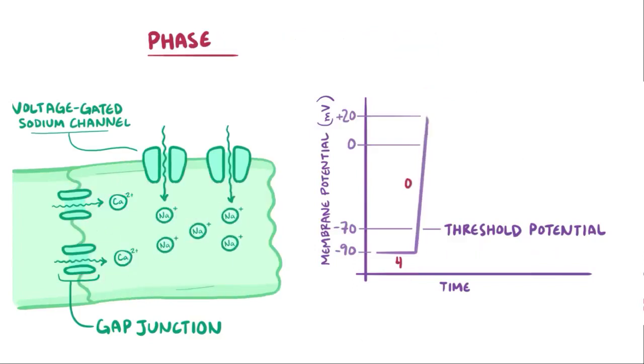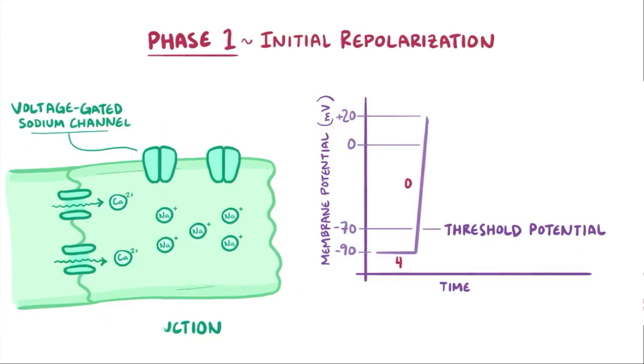Alright, so if the membrane potential rises above negative 70 millivolts and keeps going all the way to plus 20 millivolts, the myocyte is depolarized, and we're in phase 1, which is called initial repolarization. At this point, the sodium channels close and the voltage-gated potassium channels sense that it's at about plus 20 millivolts, and they open, allowing potassium ions to leave the cell.